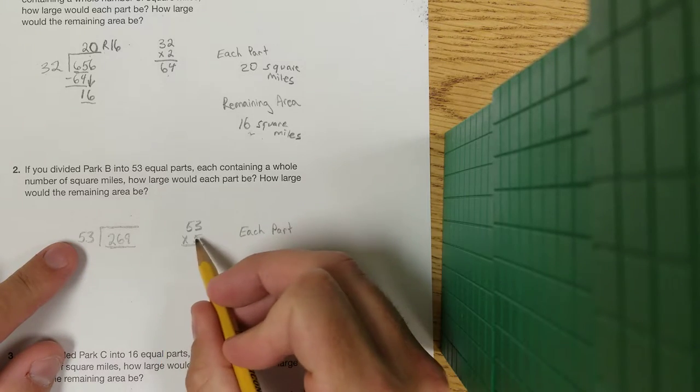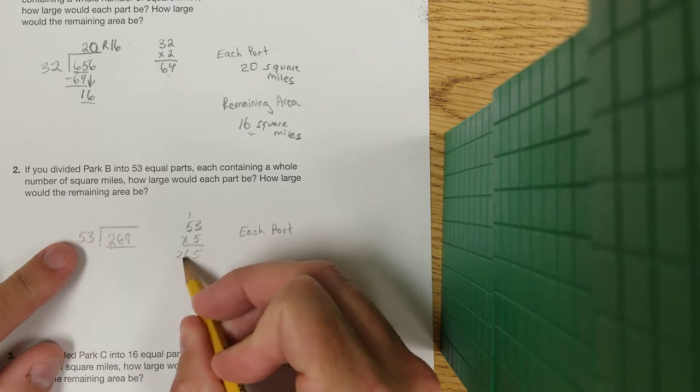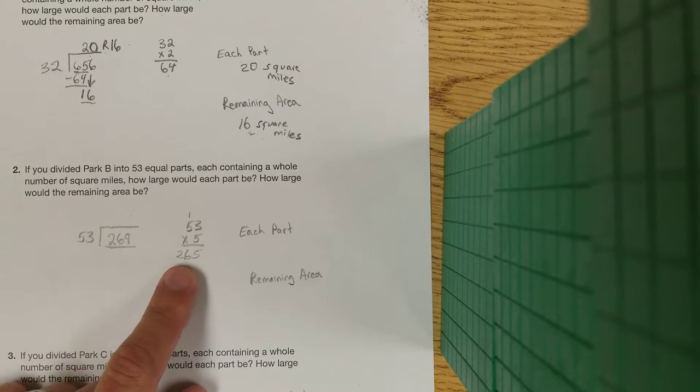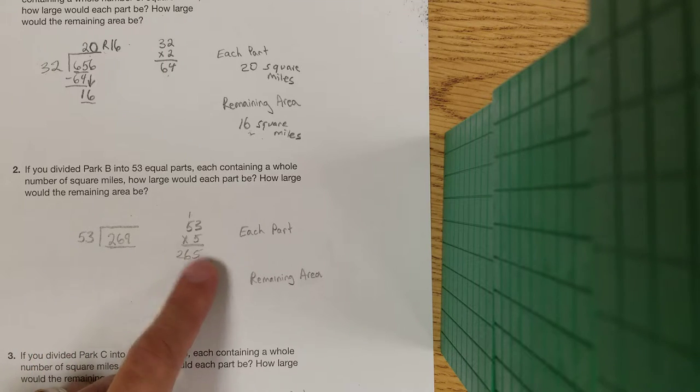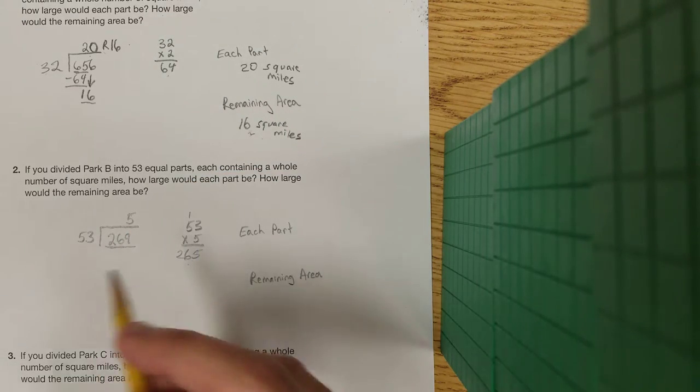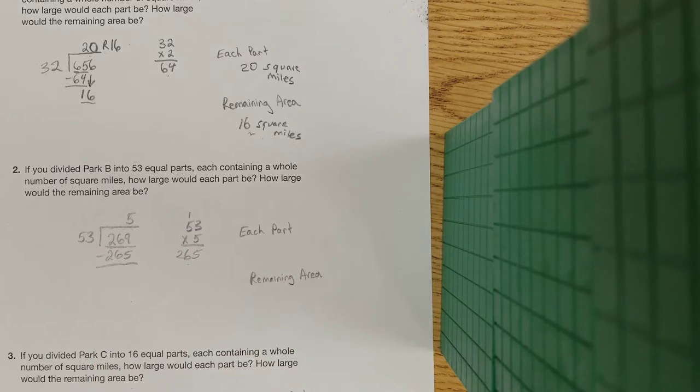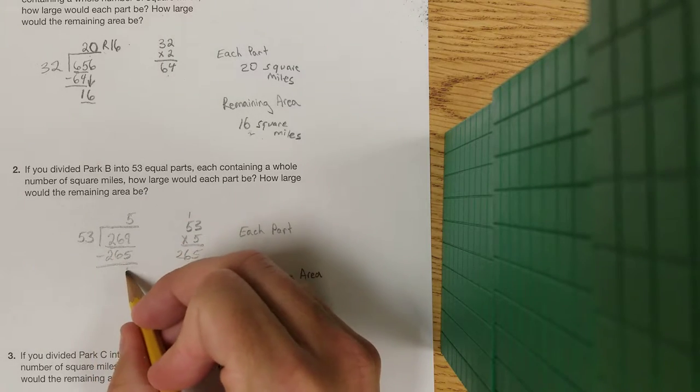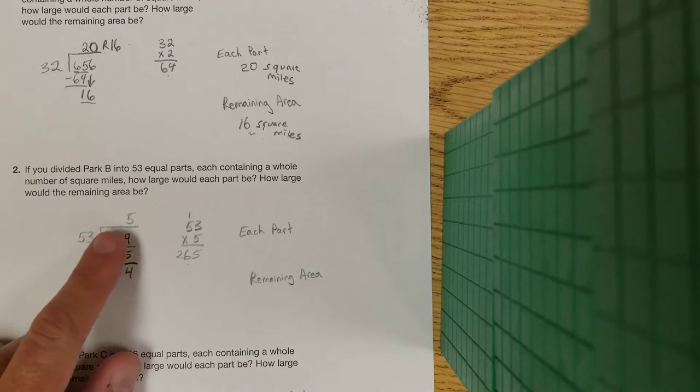So I'm just going to go over here and I'm going to take 53 times 5. 5 times 3 is 15, 5 times 5 is 25 plus 1 is 26, so that's 265, which is smaller than 269 so that's good. So I'm going to put the 5 above the 9. 5 times 53 was 265, so I'm going to subtract. 9 minus 5 is 4, 0, 0.